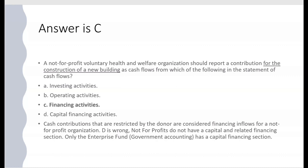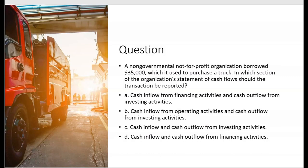When a not-for-profit receives a restricted contribution — say, restricted for construction of a new building — that's always a financing activity. Make a note: restricted contributions will always be a financing inflow. But when they start spending that cash on construction, it becomes an investing outflow, because they're constructing a new building. So restricted inflows are financing inflows, but once the not-for-profit starts spending that money as intended by the donor, it becomes an investing outflow.